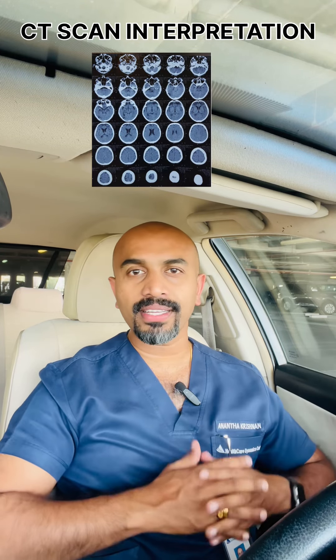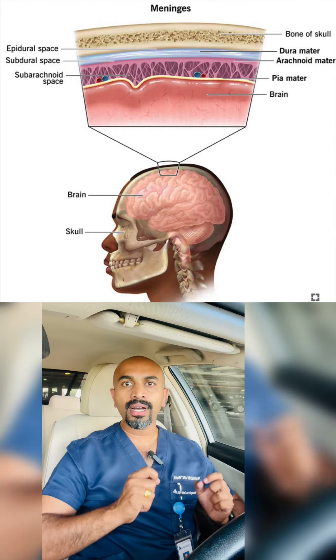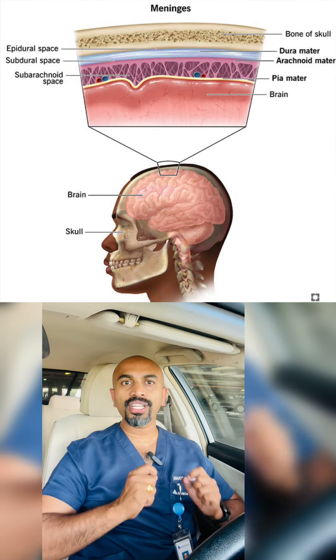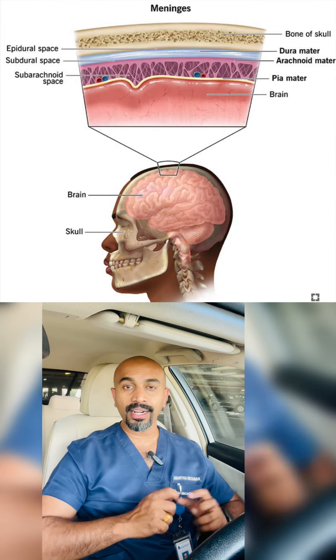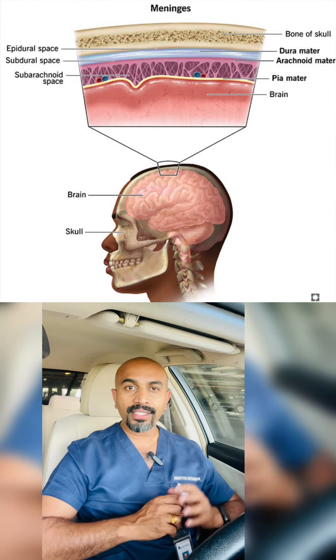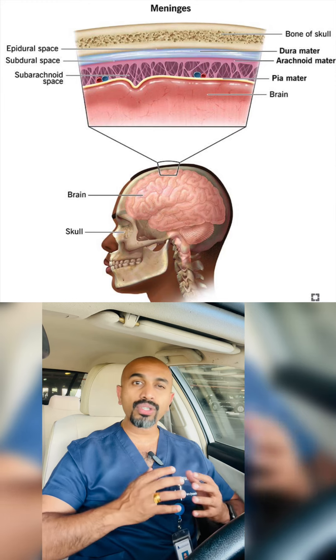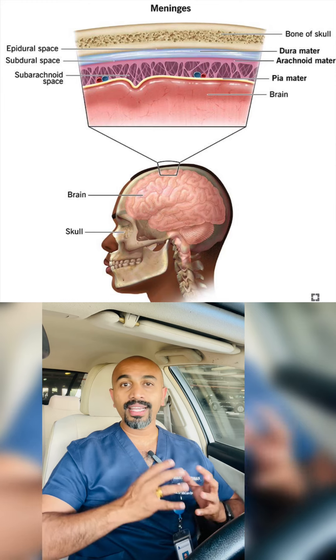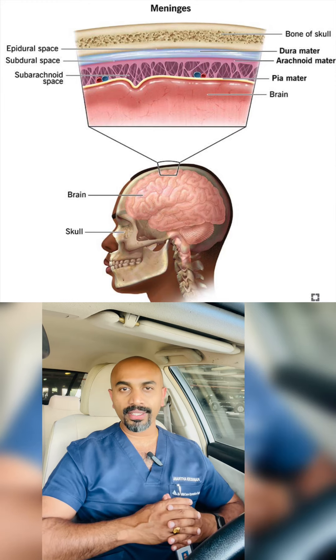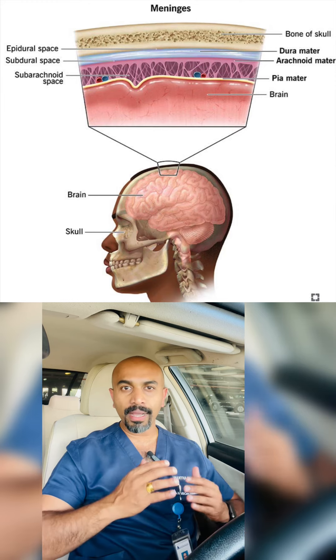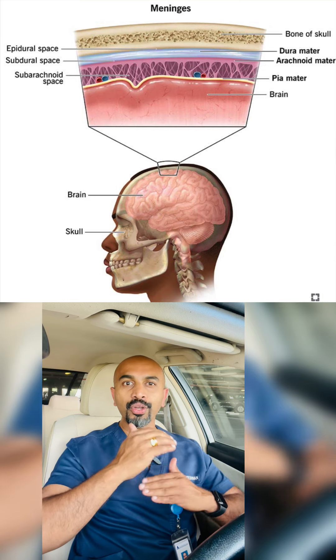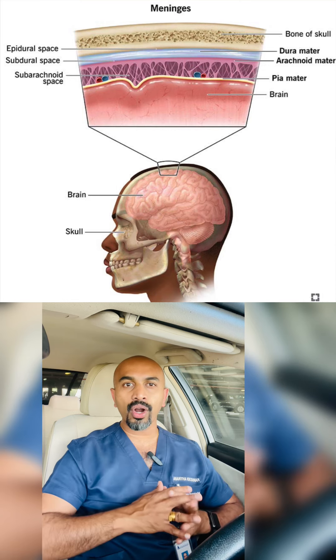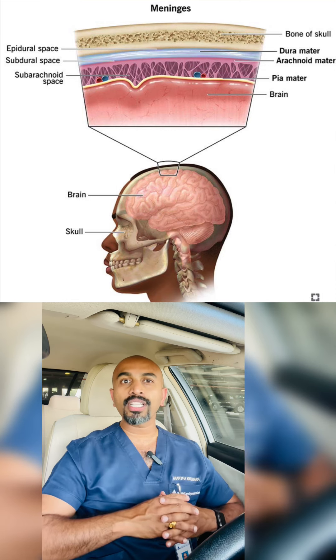Interpretation of CT scan findings is very easy. Let's try. As you know the structure of the brain, the outer hardest portion is called the skull. Under this, the layer close to the skull is the dura mater. The space between the skull and dura mater is called the epidural space.